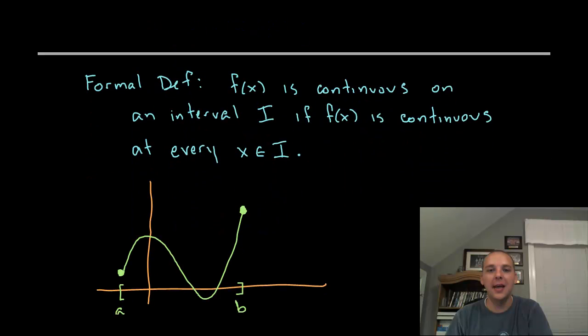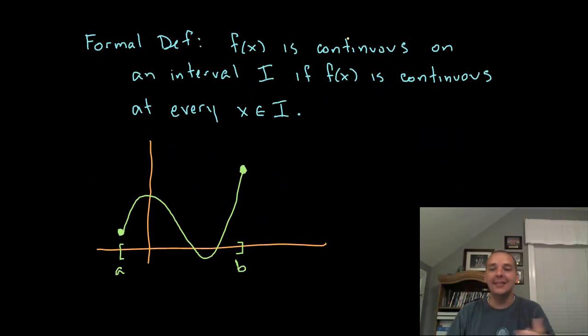But now how do we extend that to saying that your function just is continuous—not at individual points, but how would you say it's just a continuous function? Well it's very simple. We say that your function is continuous on a whole entire interval if it's continuous at every point in the interval. This is very simple. So we would say that this function drawn right here between a and b is a continuous function on this interval because if you pick any random c value or any random x value like right here, it's continuous there and it's continuous there. Basically saying that there's no breaks, jumps, holes, asymptotes, anything like that that messes up between a and b.